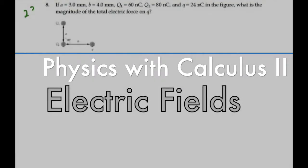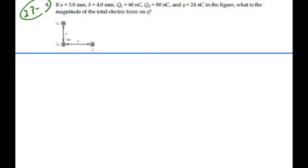Here's problem 23.8. If A is equal to 3 millimeters and B is equal to 4 millimeters, Q1 is equal to 60 nanocoulombs and that's going to be a positive charge.